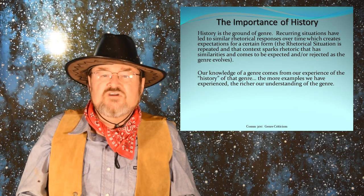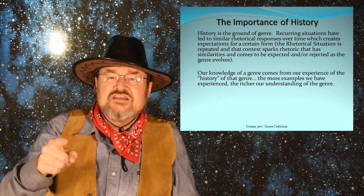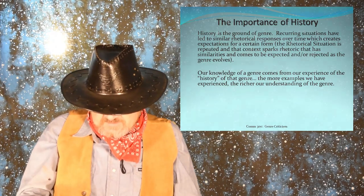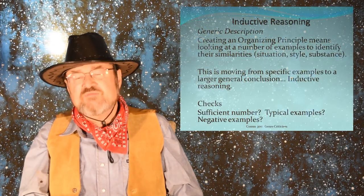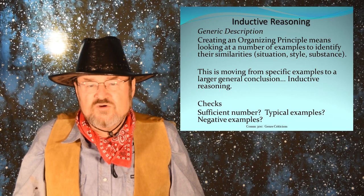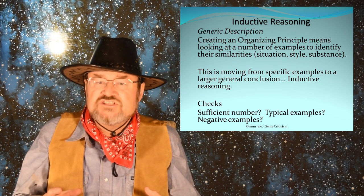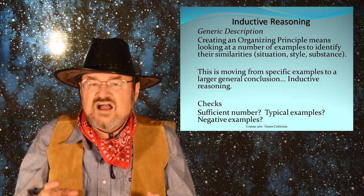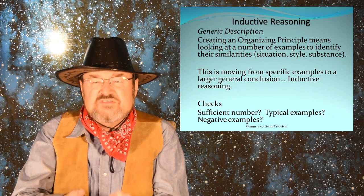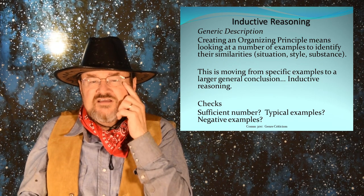Our knowledge of a genre comes from our experience of the history of that genre. How many romantic comedies have you seen to give you an understanding of what one should look like now in your expectation? So how do inductive and deductive reasoning play out in genre analysis? When you are developing a genre, you're creating an organizing principle — you're looking at examples and trying to find what's similar about all these eulogies or apologies. What do they all have in common? That is inductive reasoning. You're moving from a series of specific examples, specific speeches or artifacts, and developing a larger organizing principle. That's inductive — it's argument from example.